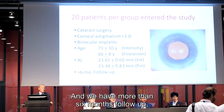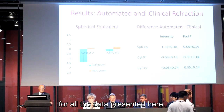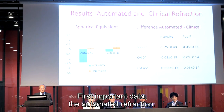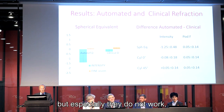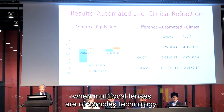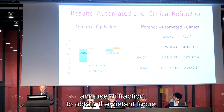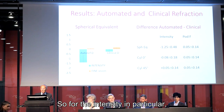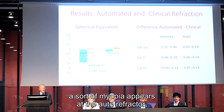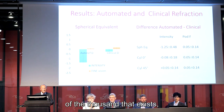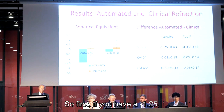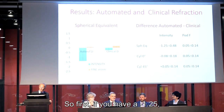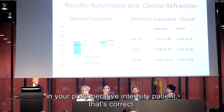We had more than six months follow-up for all the data presented here. First important data: the automated refraction. We know they do not work well with multifocal lenses, but especially they do not work when multifocal lenses are of complex technology and use diffraction to obtain the distant focus. So for the Intensity in particular, a sort of myopia appears at the autorefractor that does not exist. If you have a minus 1.25 in your postoperative Intensity patient, that's correct — they are not myopic.